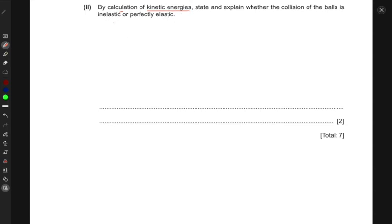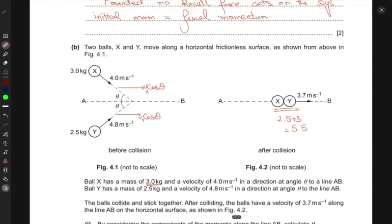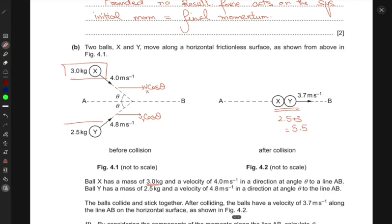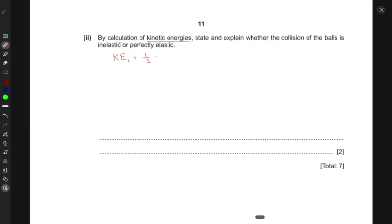Kinetic energy conservation can be checked by computing the kinetic energy of the initial system. Let's call it KEI. That would be half the mass of the first ball. We compute the kinetic energy for this one, then for this one, and add them. So the initial KE would be half times 3.0 times 4.0 squared plus half times 2.5 times 4.8 squared, which equals 53 joules.